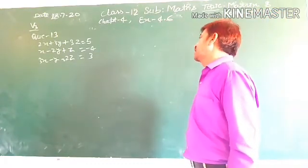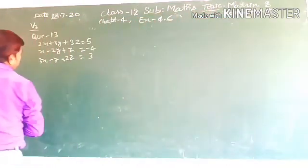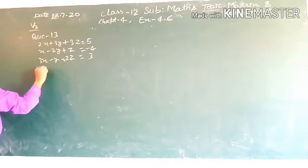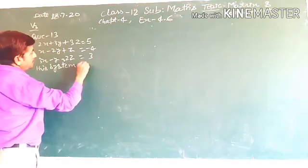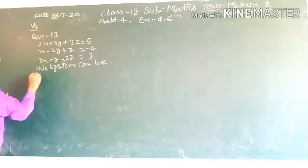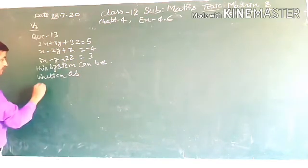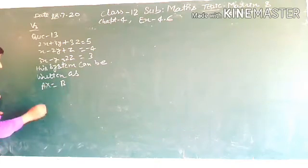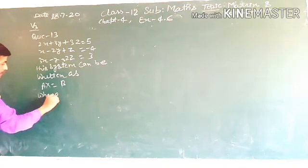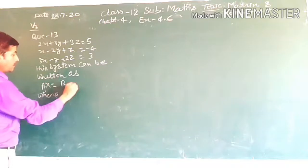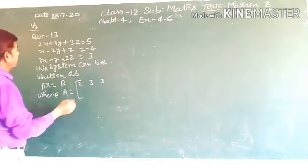We find the value of X, Y, Z by using matrix method. This system can be written as A·X = B, where matrix A has elements: 2, 3, 3, 1...